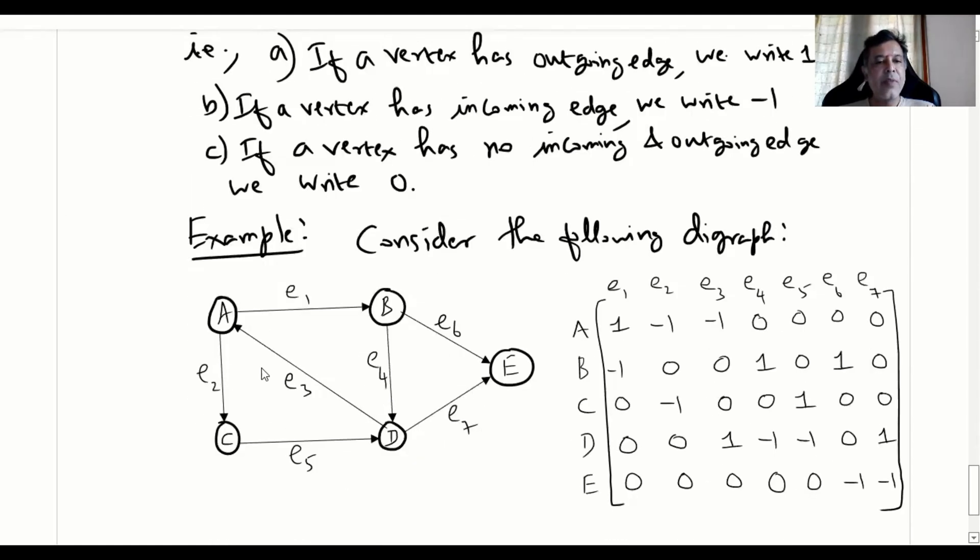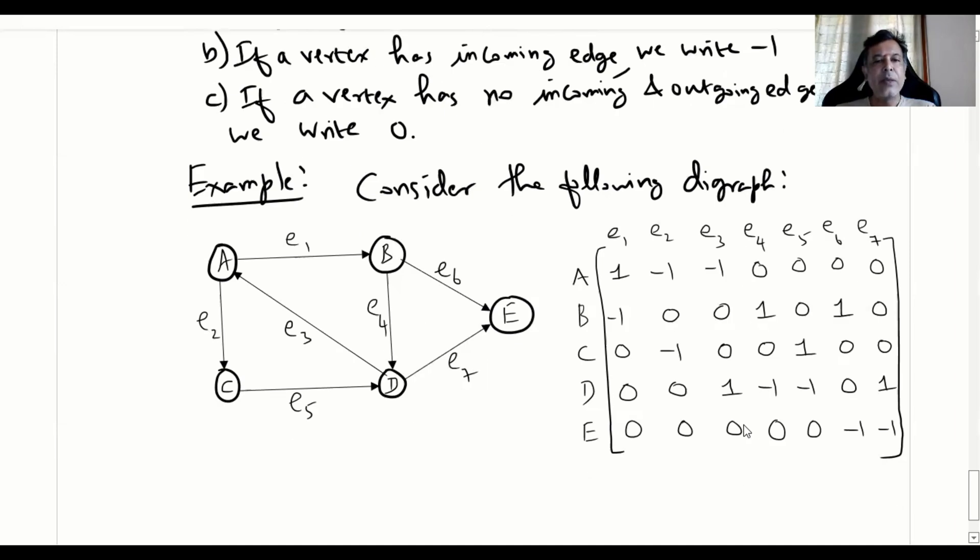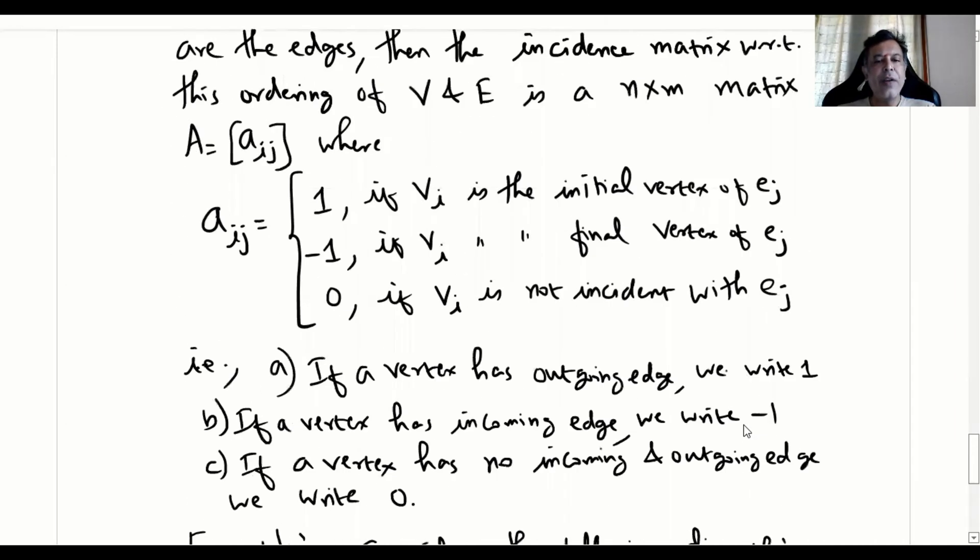For example, let us consider this example. We may notice here, A to B is there, but there is no B to A, that means A to B, I mean A and e1. For example, here it is 1 specified because there is a route. Whereas, let us see, B, A means B, e1, it will be -1 because it is having an incoming arrow for that. That is why it is -1. A and e6, there is no access only. So you put 0. Likewise, we fill up this particular matrix. So this is about incidence matrix of a directed graph.